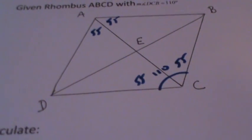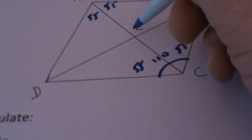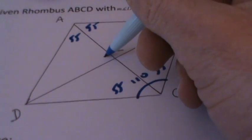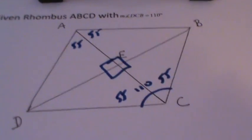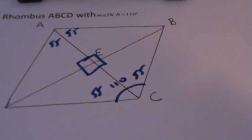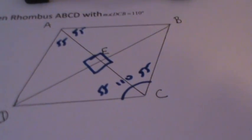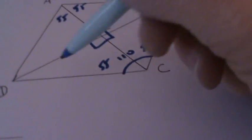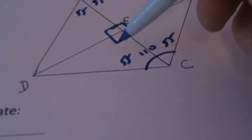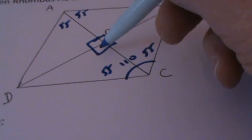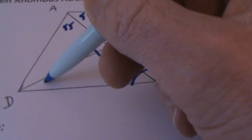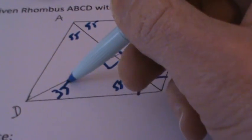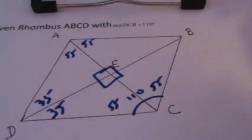The angles in the middle where the diagonals intersect are all 90 degrees — we have four right angles in the middle. The next step is to solve for the missing angle by taking the sum of 55 and 90, subtracting from 180, which gives us 35 degrees.